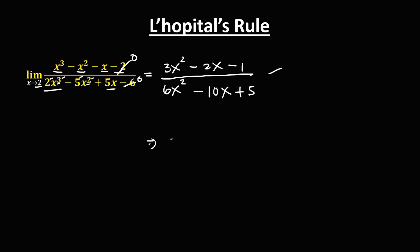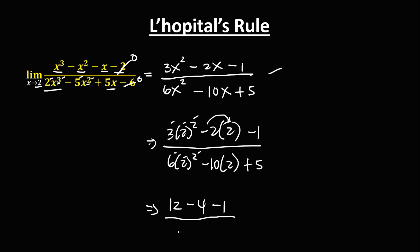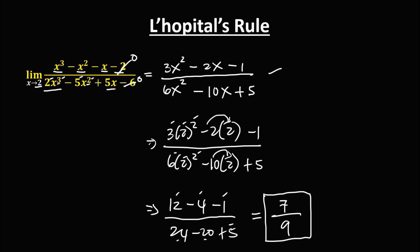As x approaches positive 2: we have 3 times 2 squared minus 2 times 2 minus 1, over 6 times 2 squared minus 10 times 2 plus 5. Simplifying: 2 squared is 4, and 4 times 3 is 12; negative 2 times 2 is negative 4; minus 1. Over: 4 times 6 is 24; negative 10 times 2 is negative 20; plus 5. Then: 12 minus 4 is 8, and 8 minus 1 is 7. Over: 24 minus 20 is 4, and 4 plus 5 is 9. So the limit is 7 over 9.